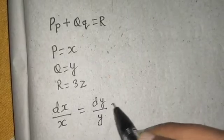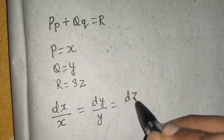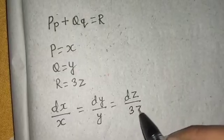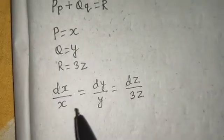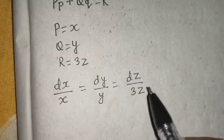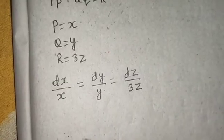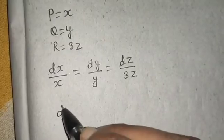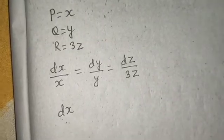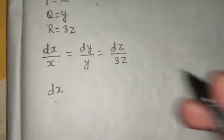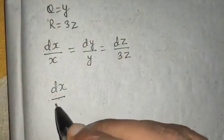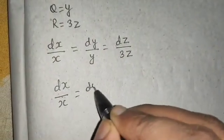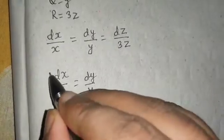Now we will compare two at a time and get some equations. So if you compare first and second, you will get dx by x equals to dy by y.